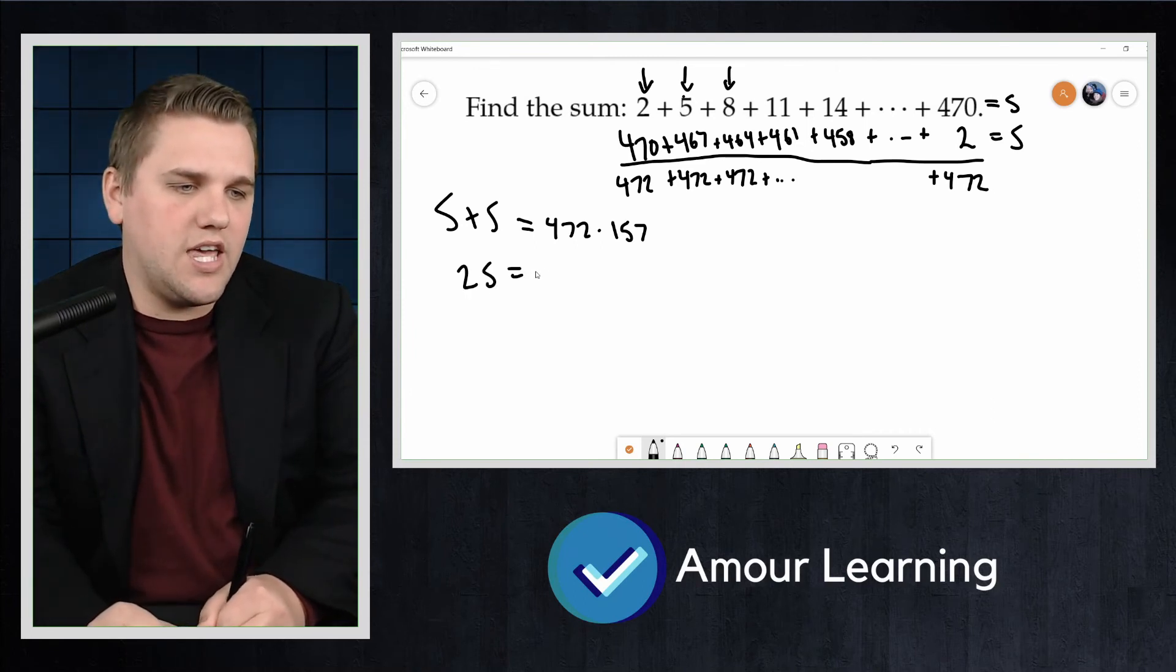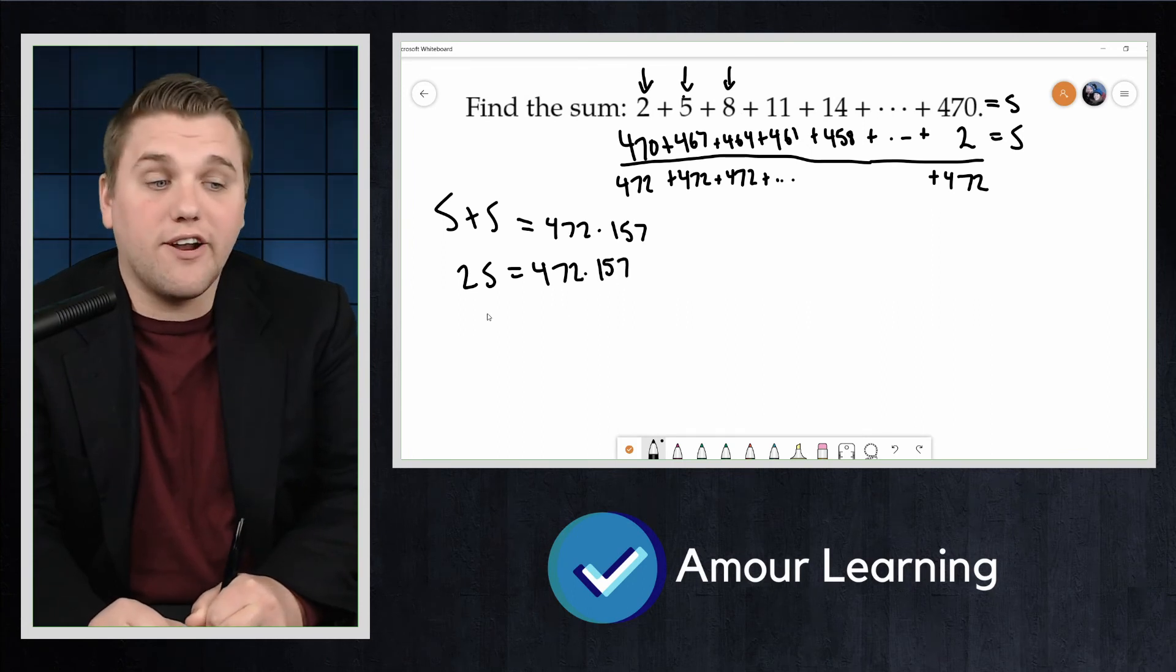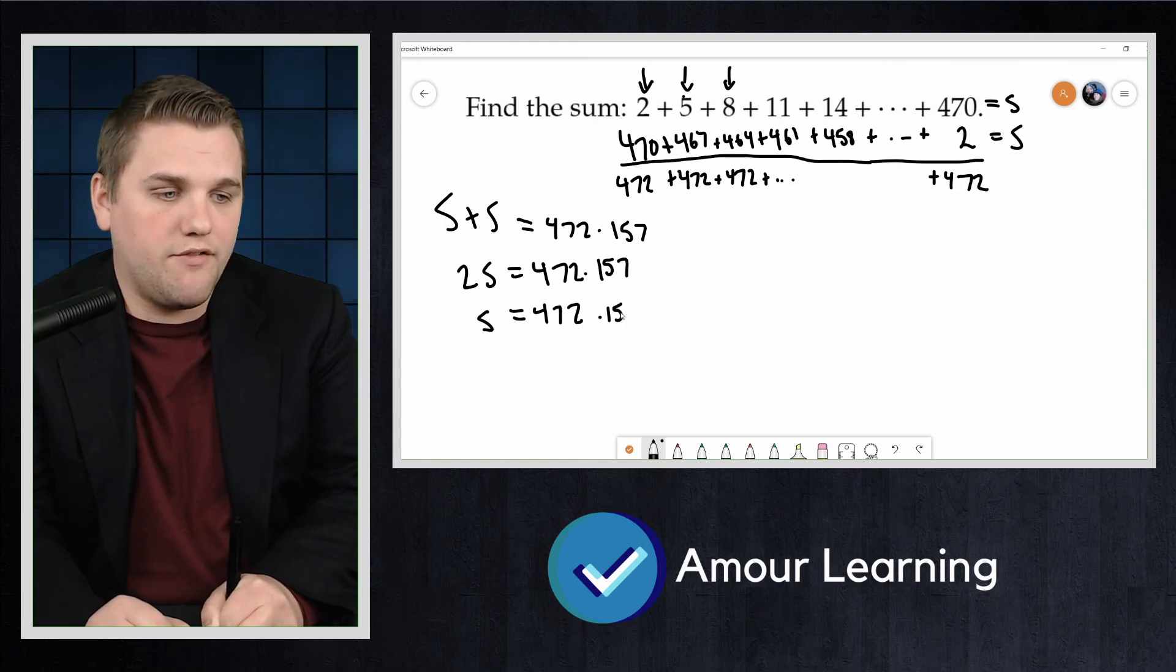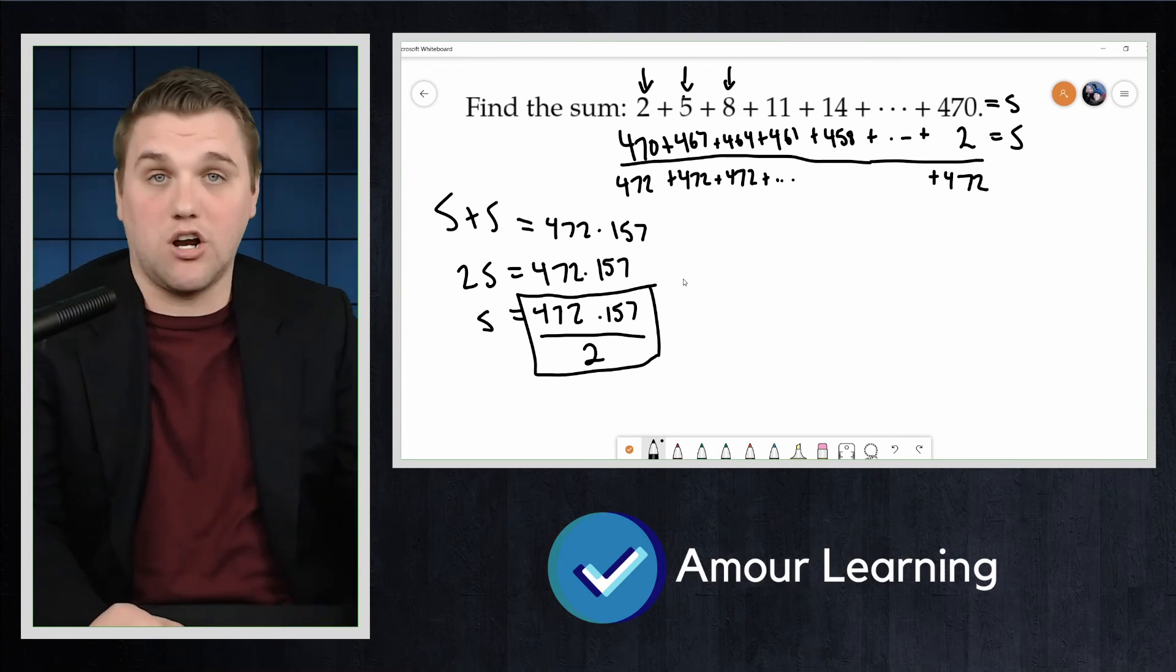2s in this case then equals 472 times 157. And so to figure out what s is, it's just 472 times 157 all over 2. Whatever that number is, that's our total.